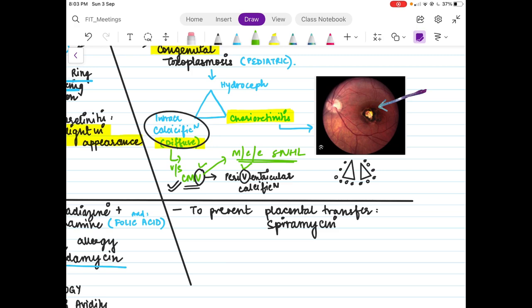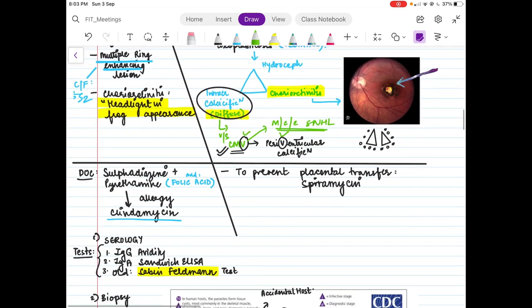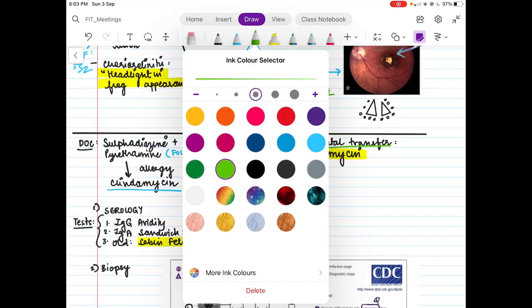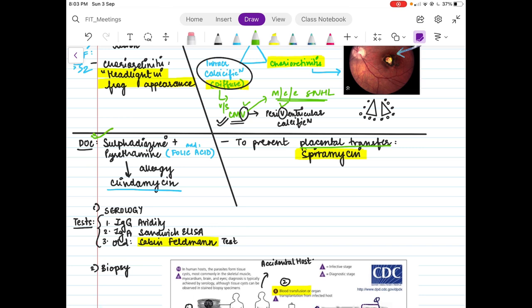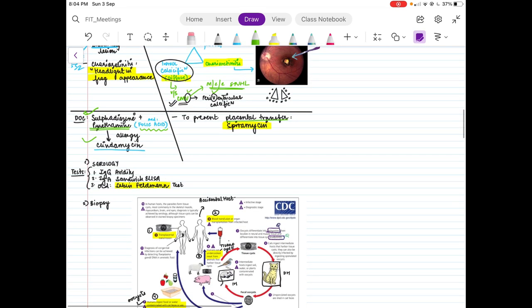For the pharma part, to prevent the placental transfer you have a drug which is known as spiramycin. If placental transfer has already happened, then you need to do the treatment which is sulfadiazine and pyrimethamine. Now pyrimethamine is a folic acid inhibitor, so you will have to give folic acid supplementation along with this. If you have a sulfa allergy, then you need to give clindamycin. All this is pharma.